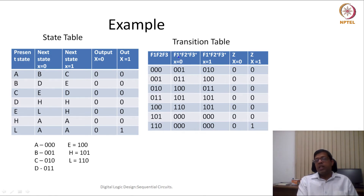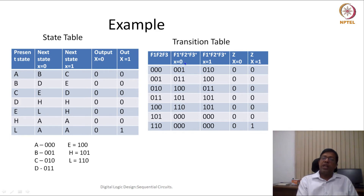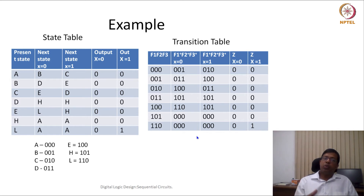Once the transition table is ready, we draw a K-map or write the Boolean expression for F1+ in terms of F1, F2, F3, and X. Similarly, we find the expression for F2+ and F3+. These are the next state expressions for all three flip-flops. If it is a D flip-flop the method is straightforward, but for JK, RS, or T flip-flops we must map those equations according to the specific flip-flop.